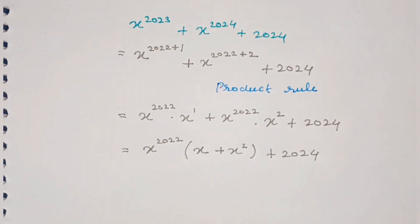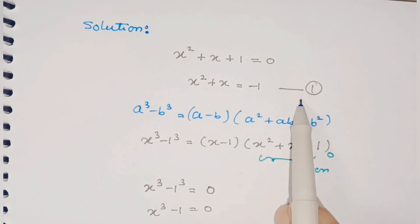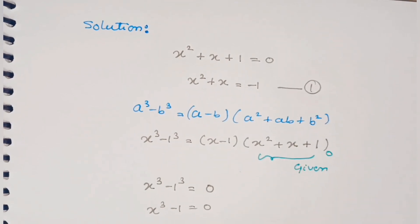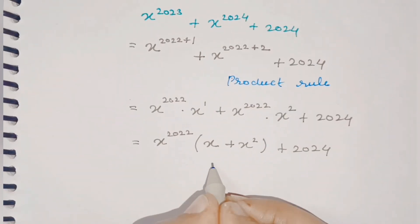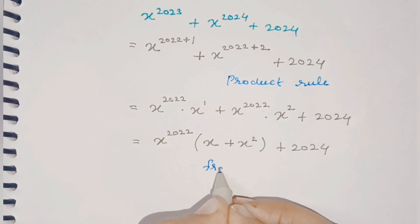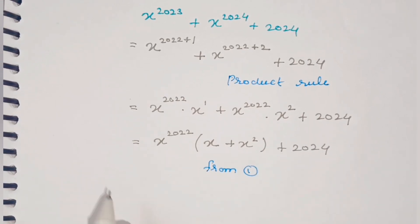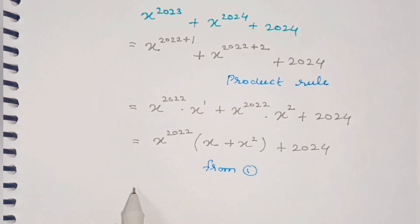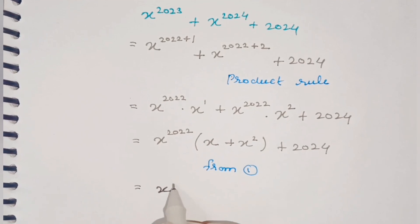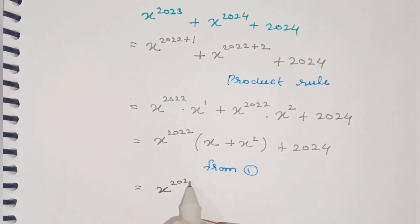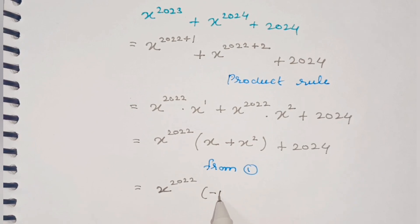We can see the bracket term (x plus x squared) is equal to minus 1 from equation number 1. So in place of this we write minus 1, giving us x raised to 2022 into (minus 1), plus 2024.